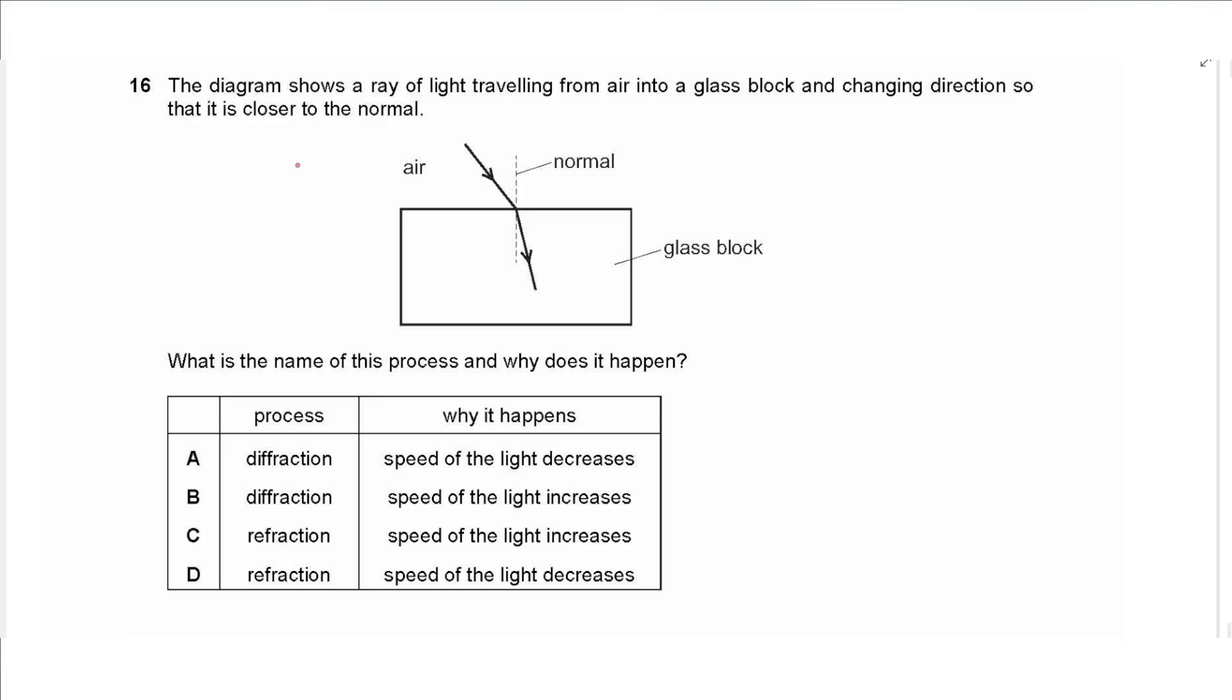Question 16 says the diagram shows a ray of light traveling from air into glass and changing direction so that it is closer to the normal. What is the name of this process and why does it happen? So this is refraction and it happens because the speed of light decreases. Bending towards the normal means the speed of light decreases, so the answer is D.